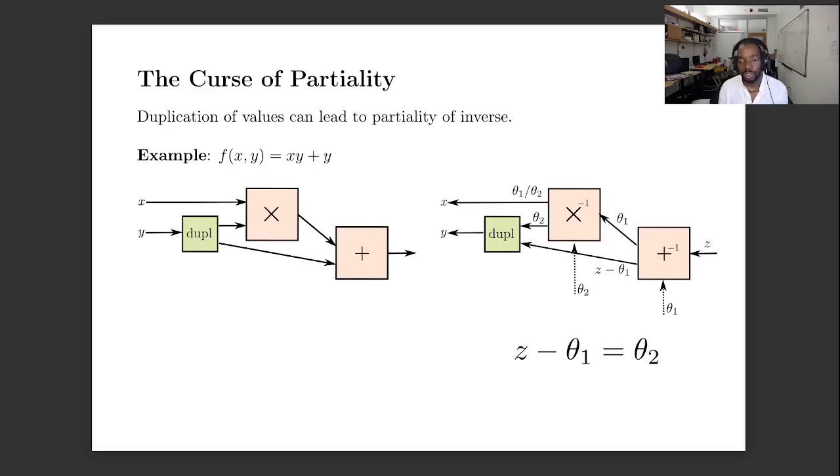And so if we follow the procedure that I showed you in the previous slides, we invert the addition function and we invert the multiplication. The problem is that we can get two different values for y which may be inconsistent. In other words, the composite function is a partial function relative to the parameter space.